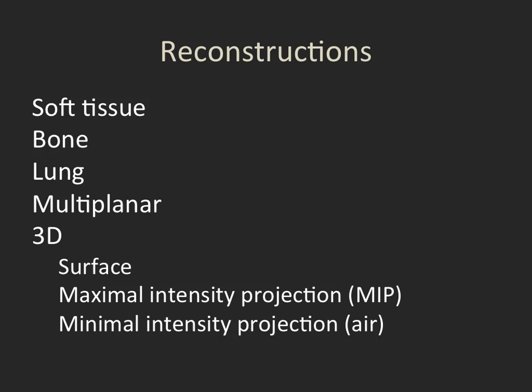We can do 3D reconstructions such as surface reconstructions and maximal intensity projection reconstructions — for example, where we display only the contrast within the aorta. Or a minimal intensity projection, where we just look at the air, for example, with a CT colonography study.